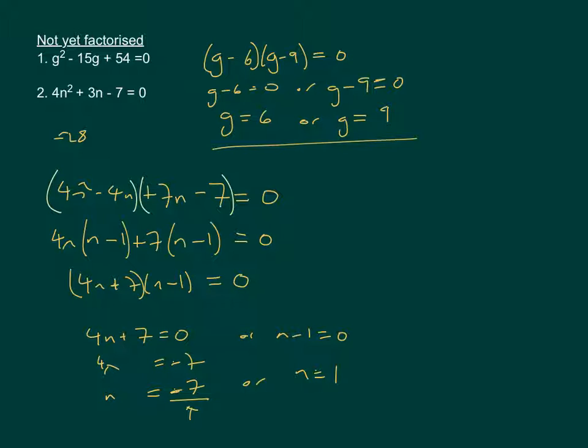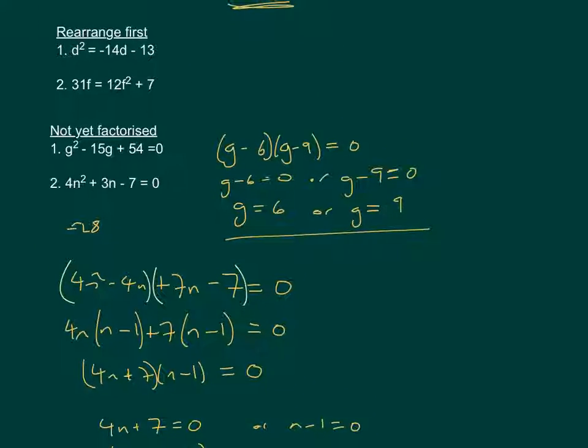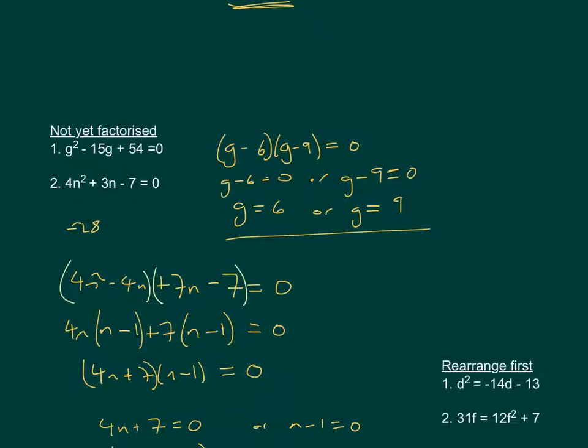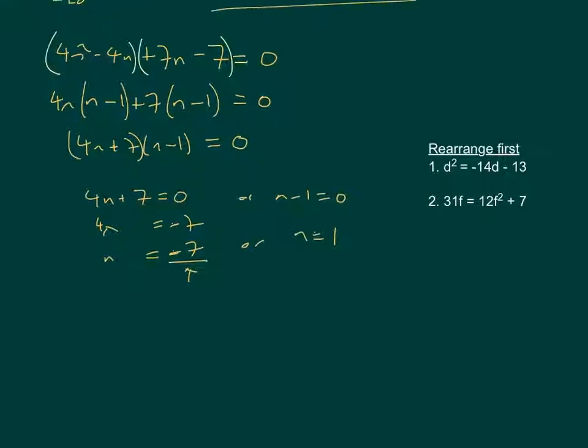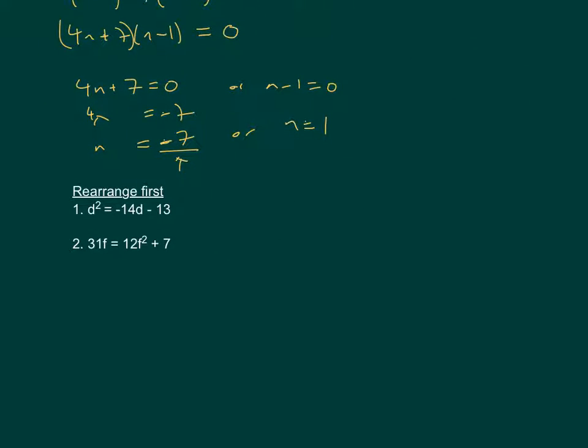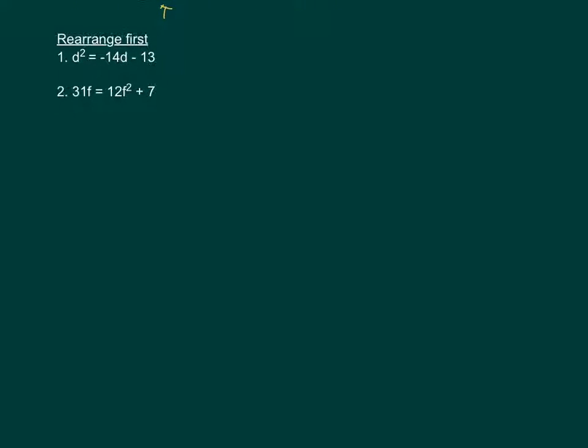Now let's move on to the final type. That's where the expression is not equal to 0 yet. We're going to have to rearrange it. The first thing to do is make it equal to 0 because you can't solve them unless the expression equals to 0. So taking this first one, we've got d squared, and then I'm going to add 14d and add 13. So if I add 14d, add 13, this will become 0, and I need to add it to the other side. So we've got d squared plus 14d plus 13 equals 0.